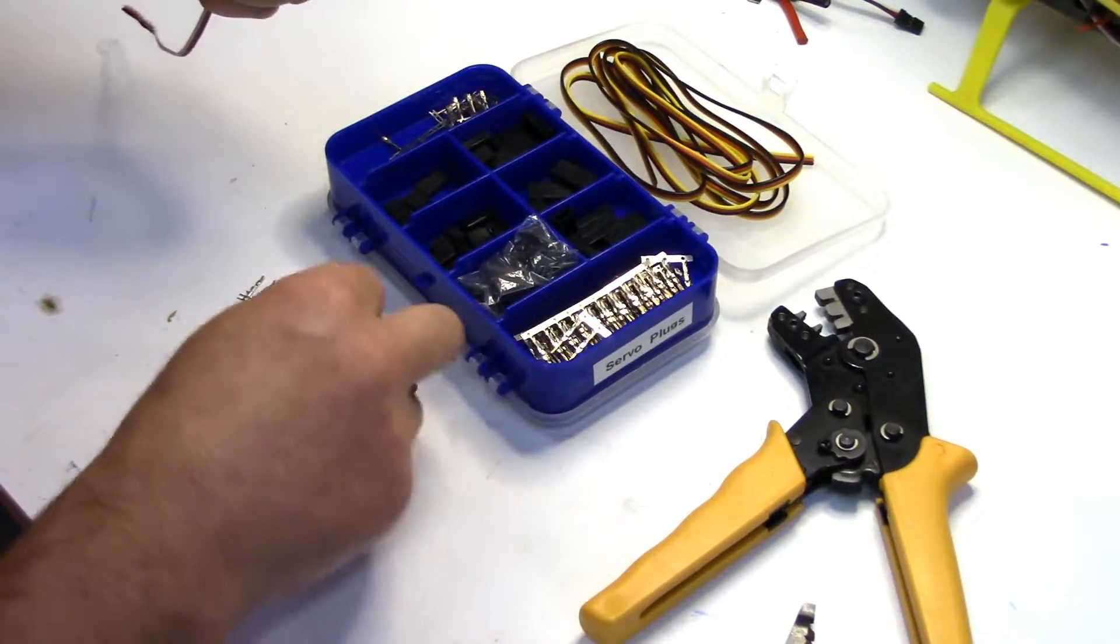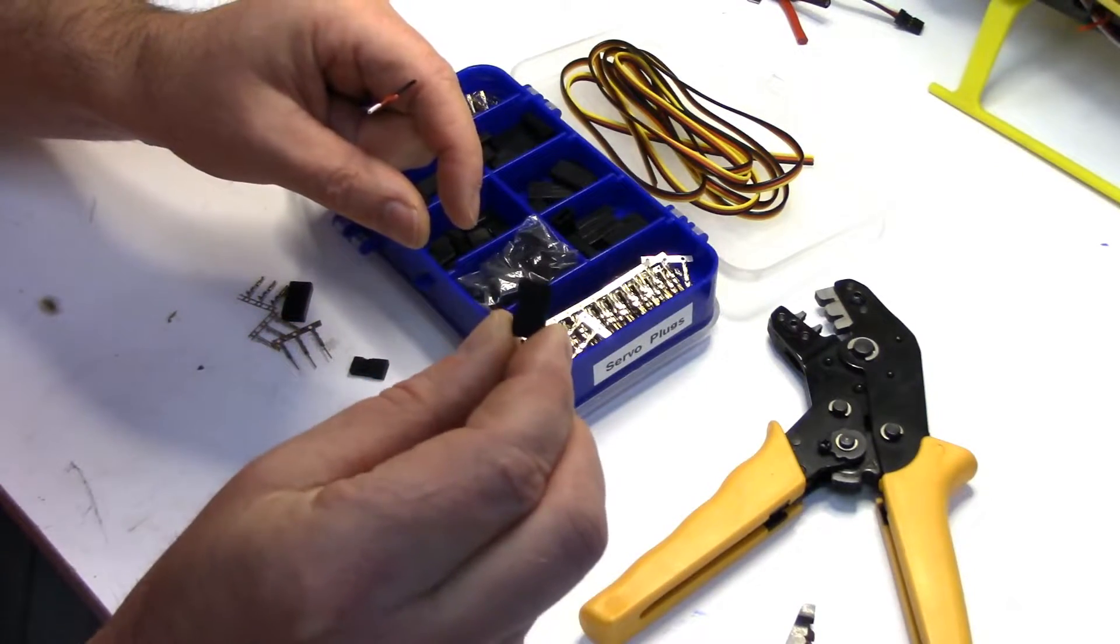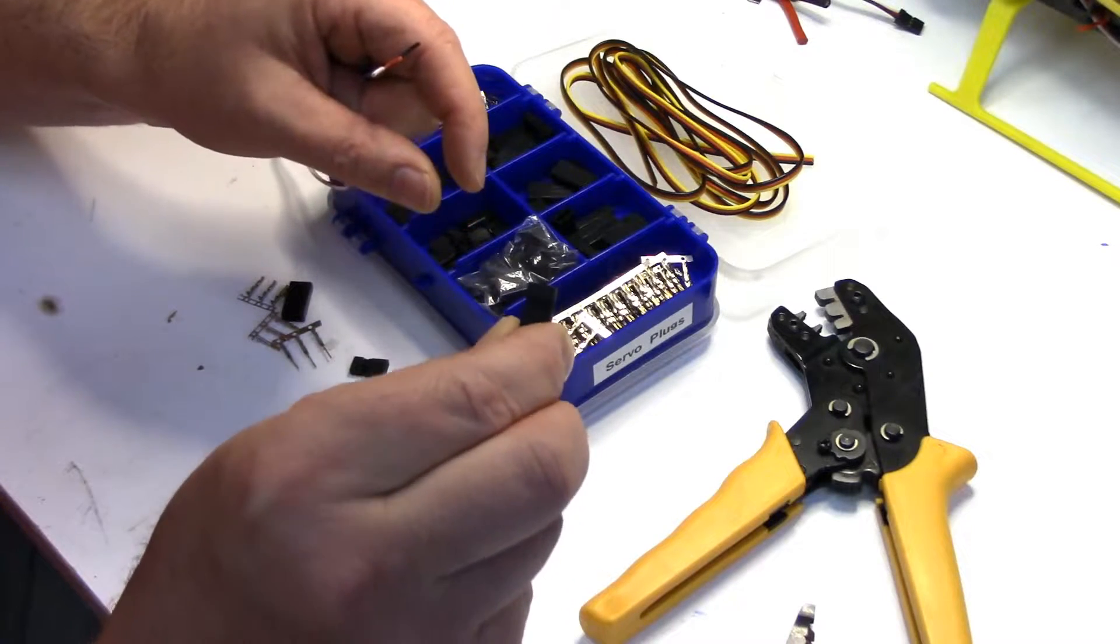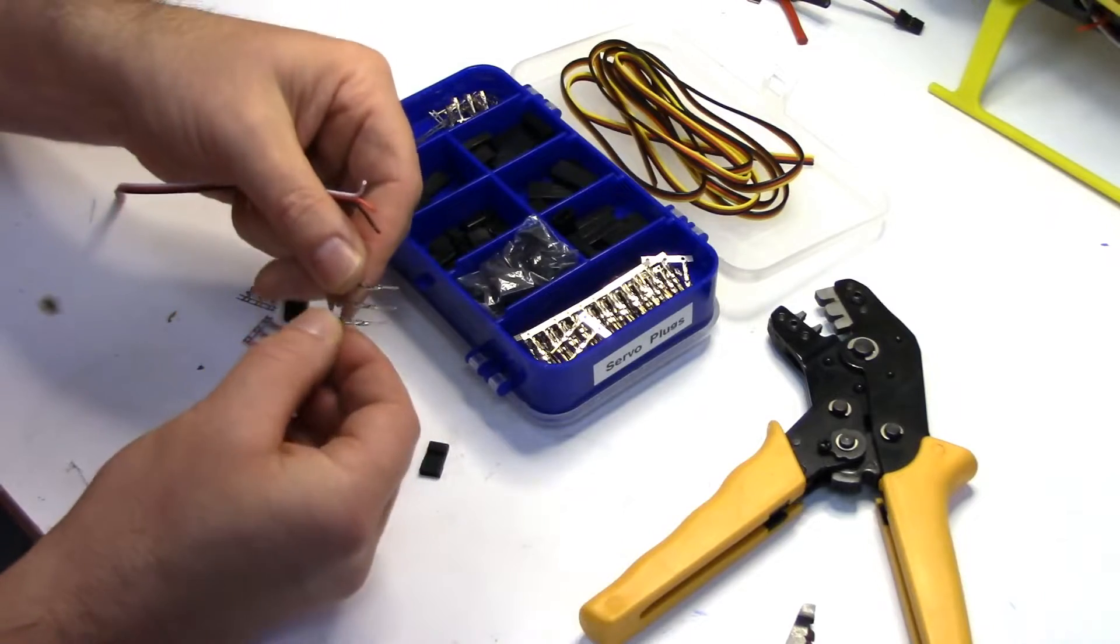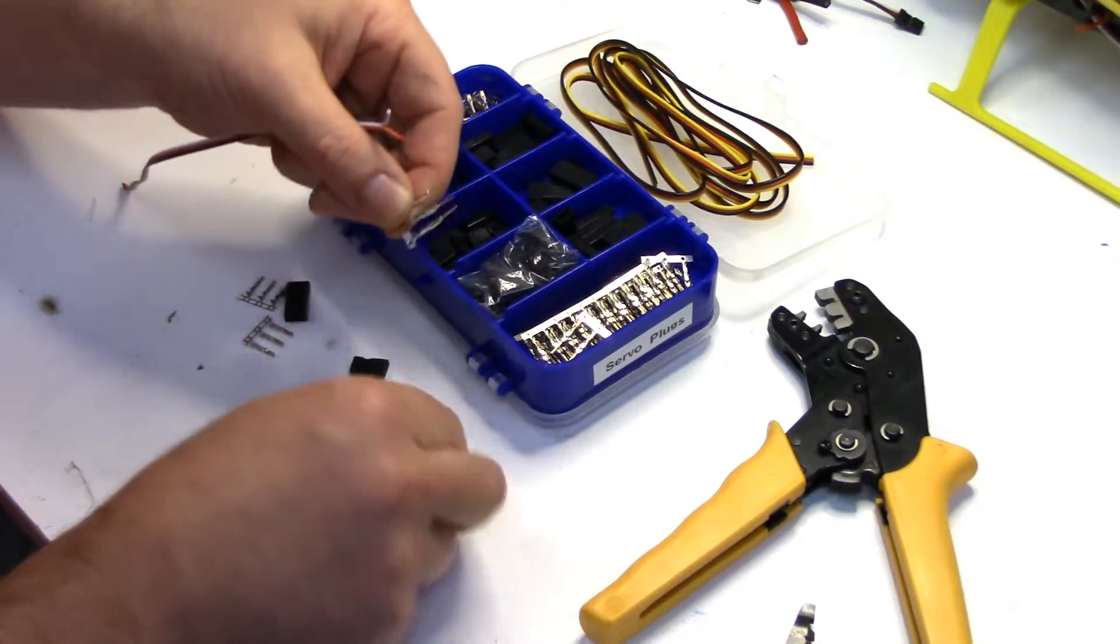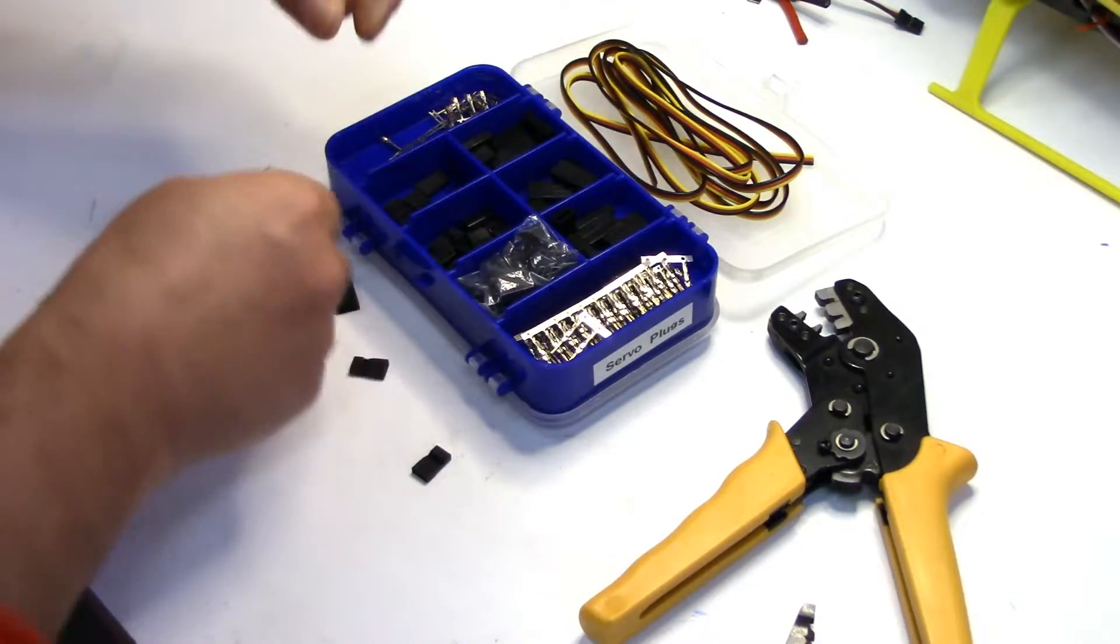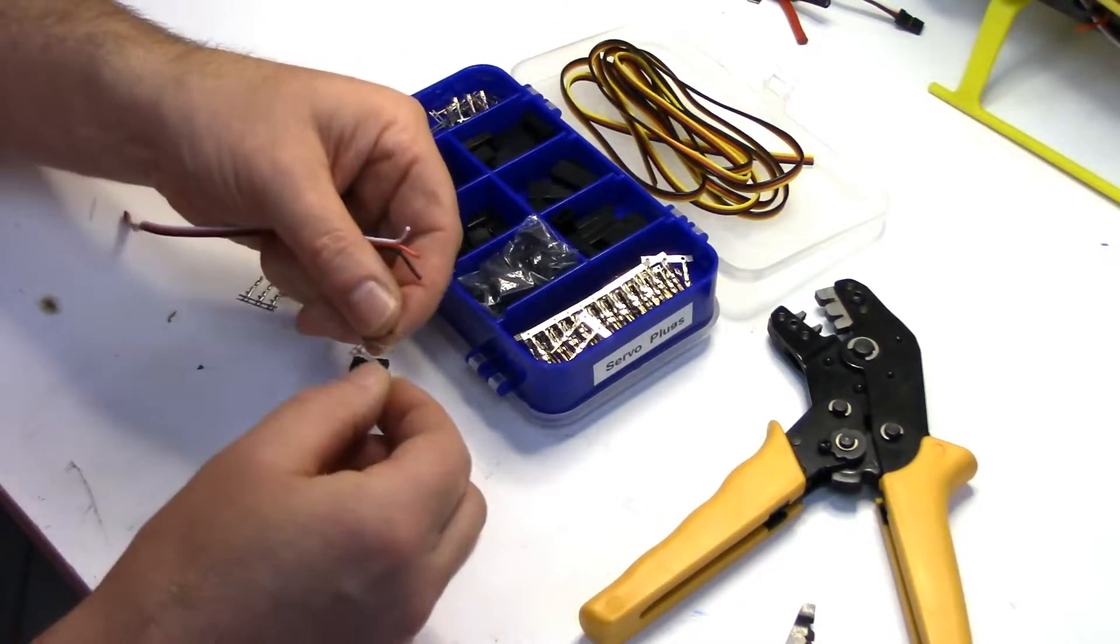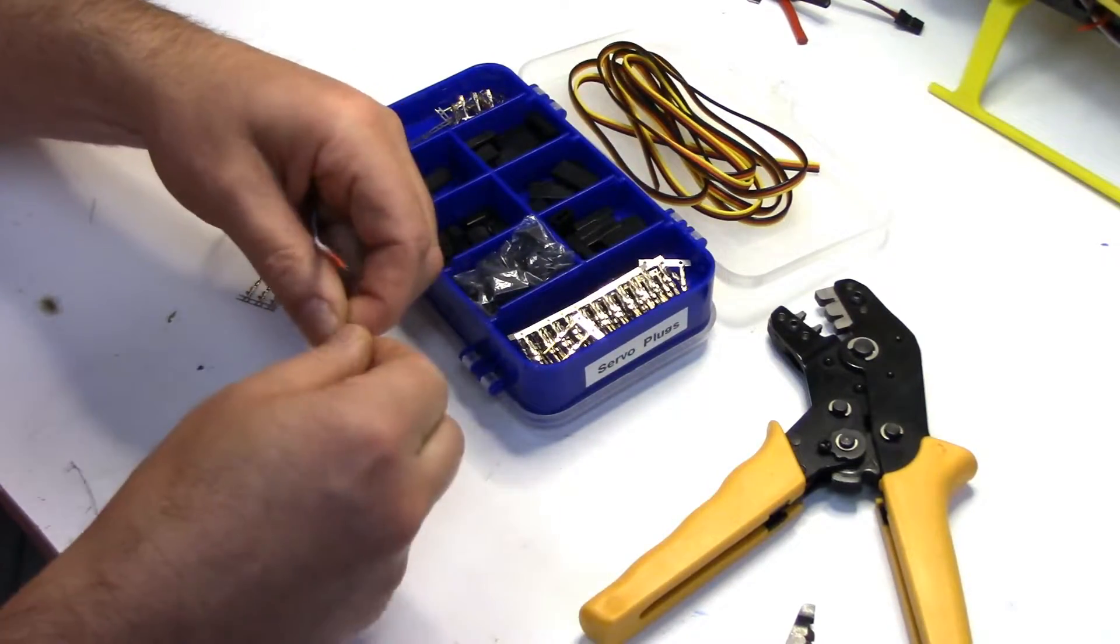There's two types of plugs. We'll actually be using both. For each crimp we'll be using the male. The female all it is, is it uses the pins that are in a male plug and then they're put into the female housing. I'll show you that. But we'll do the male pins first. So you just take them off these little terminal strips. Just bend them off.